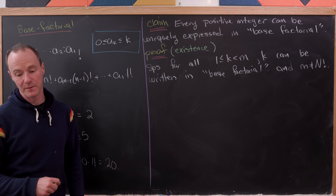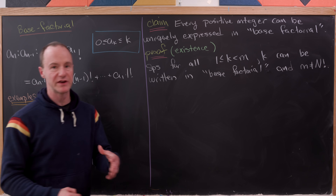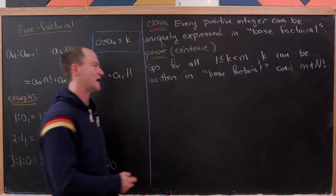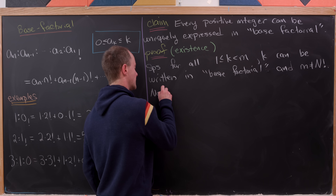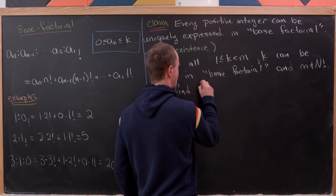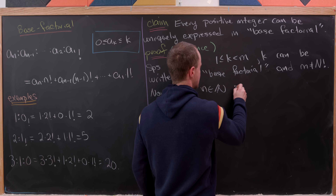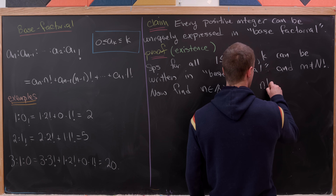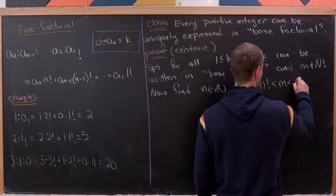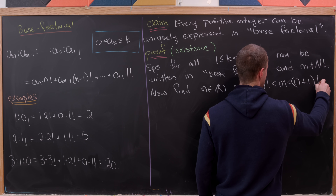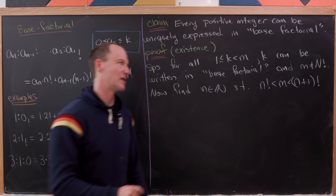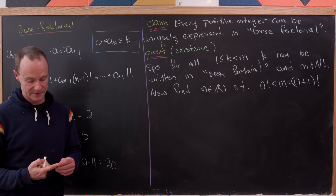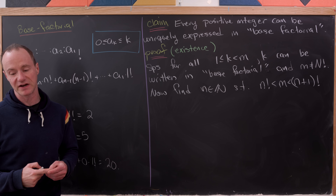So how will we proceed from this? What we want to do is find the two factorials that m is between. In other words, we'll find some natural number n such that n! is strictly less than m, which is strictly less than (n+1)!. That's why we assumed m was not a factorial — so that it would be strictly between two consecutive factorial numbers.